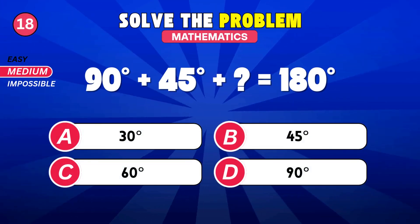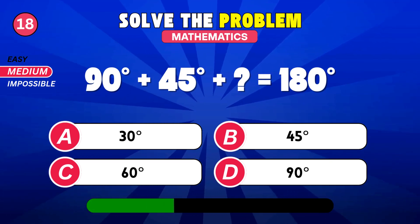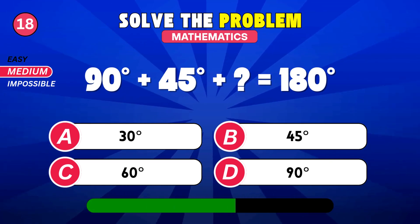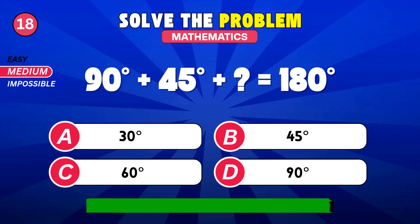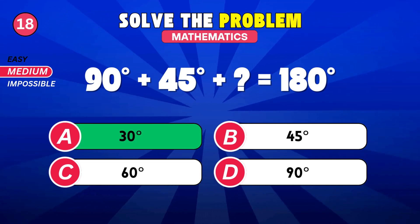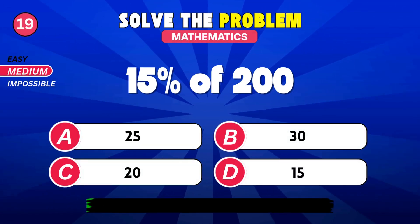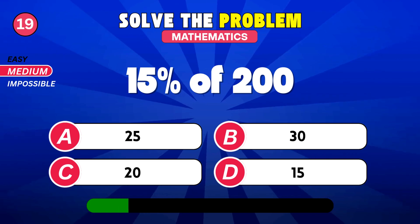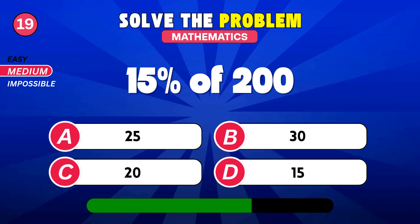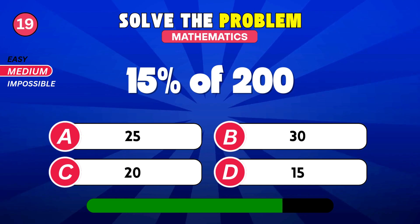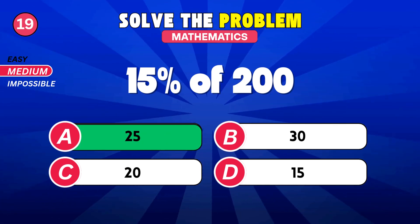Find the triangle's 3rd angle. 30 degrees. 15% of 200. 25. 20.